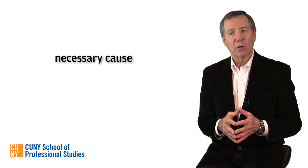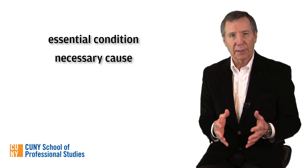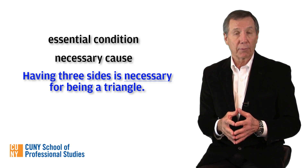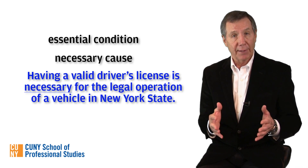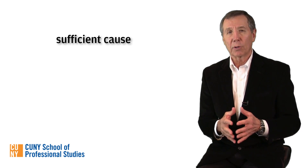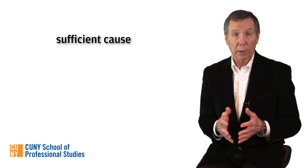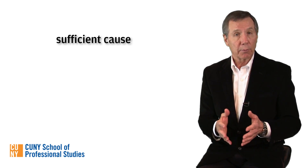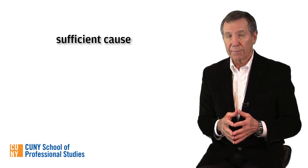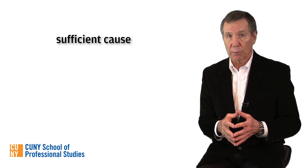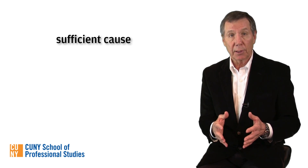You can think of a necessary cause as an essential condition. Having three sides is necessary for being a triangle. Having a valid driver's license is necessary for the legal operation of a vehicle in New York State. A sufficient cause or condition, on the other hand, will always, in and of itself, be enough to produce the effect. In other words, if X is a sufficient condition for Y, then if X is present, Y must also be present — or simply, if X, then Y.